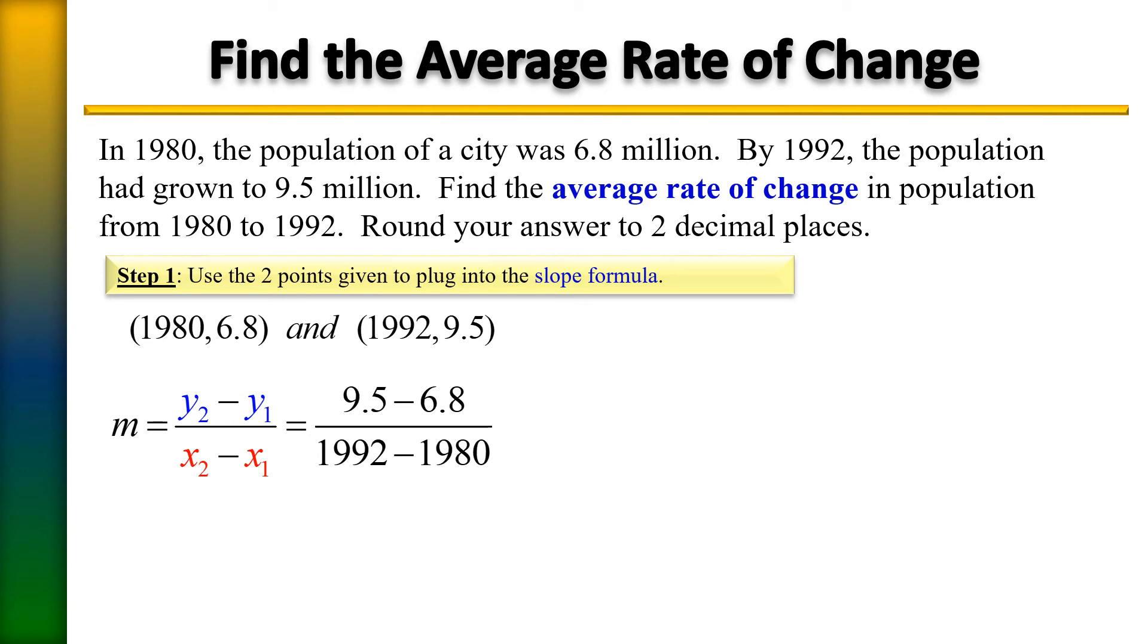That gives us a value of 2.7 over 12. If you use your calculator and do 2.7 divided by 12, you should get a value of 0.225.